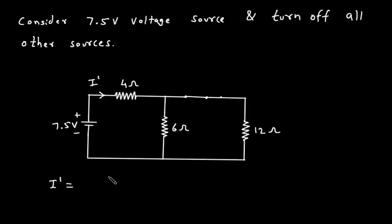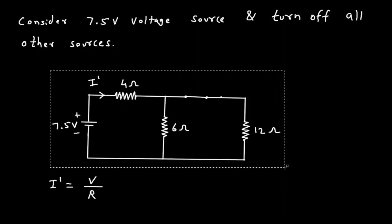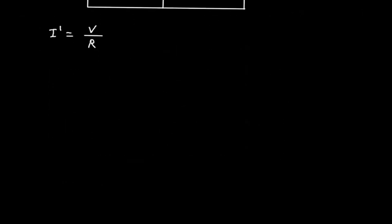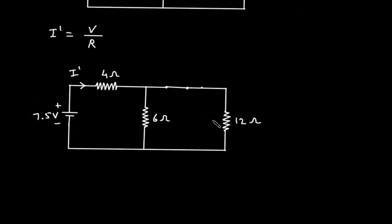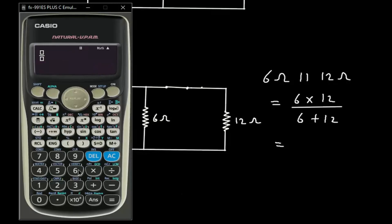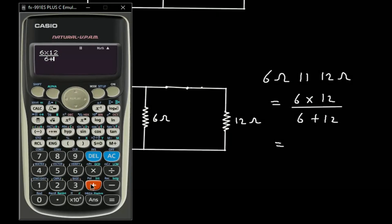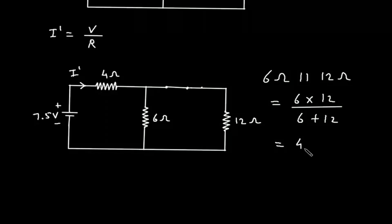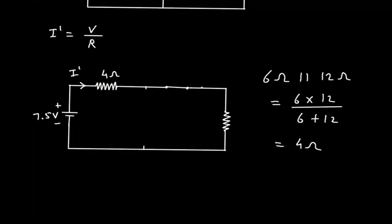I prime is equal to V divided by R. Here we can see this 6 Ohm and 12 Ohm are in parallel. So 6 Ohm parallel with 12 Ohm gives 6 times 12 divided by 6 plus 12, which equals 4 Ohm. So we can replace these resistances with a single resistor of 4 Ohm.